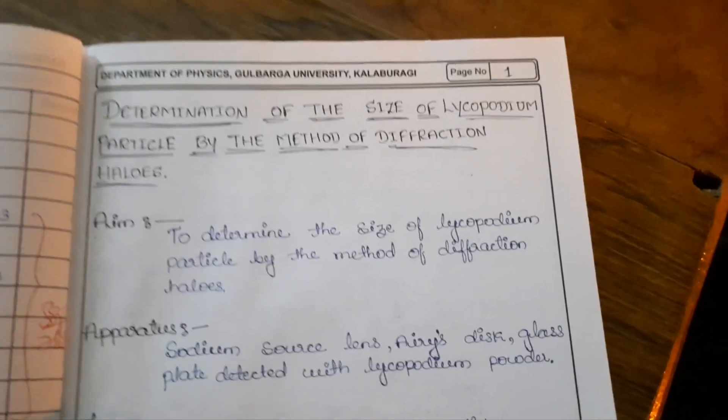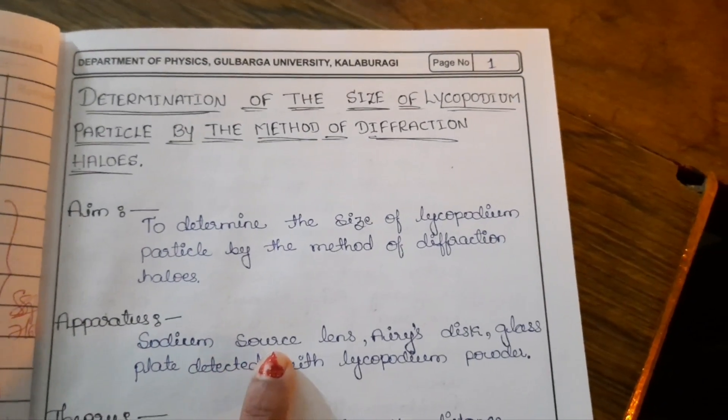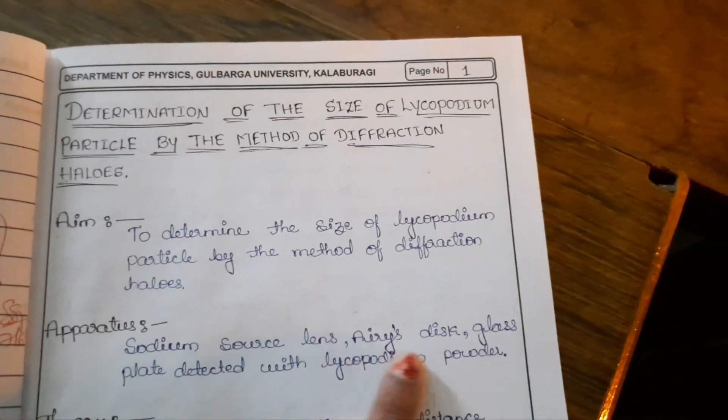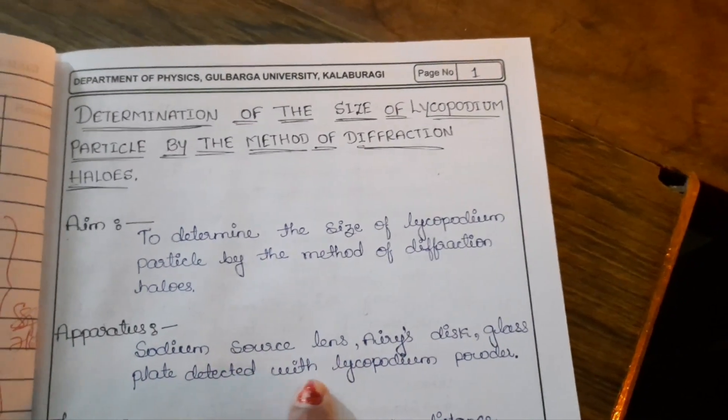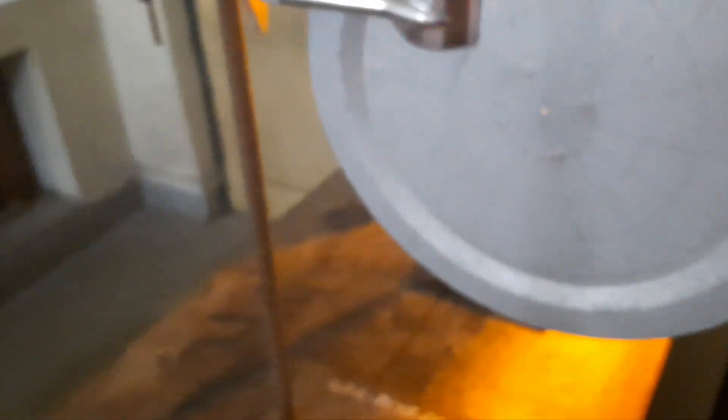Apparatus required here are: sodium source, lens, array disc, glass plate dusted with lycopodium powder. You can see this is the sodium source, lens, array disc, and then this is the glass plate dusted with lycopodium powder particles. You need a scale to measure the distance. This is the experimental setup.